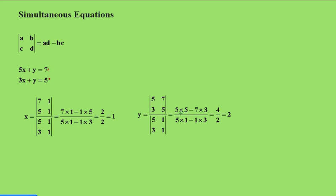5 times 5 over here minus 7 times the 3, and of course that's 25 take away 21 which is 4, and 4 divided by 2 gives me 2. So the solution is X equals 1 and Y equals 2.